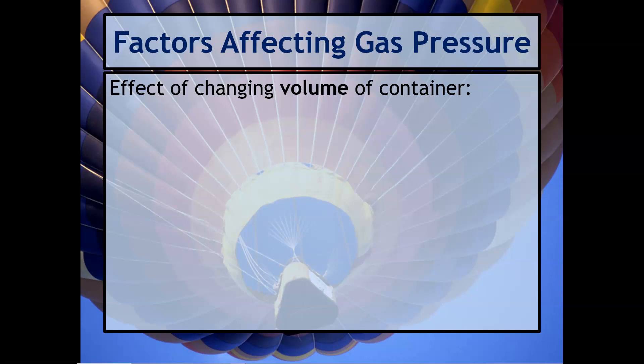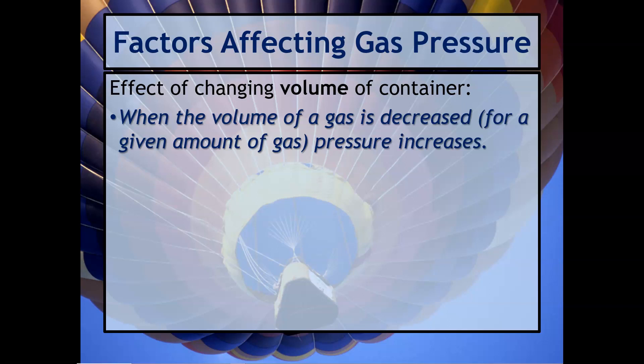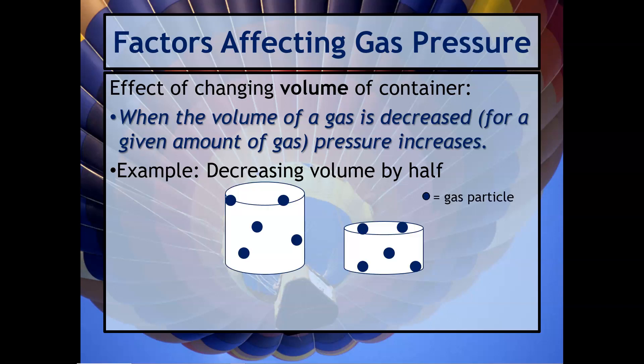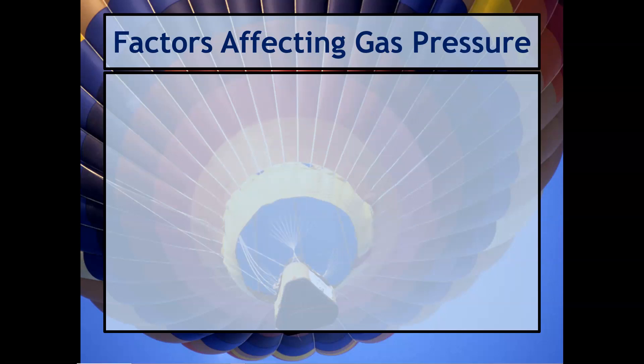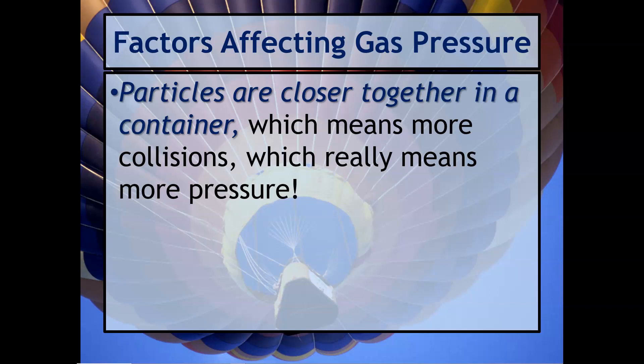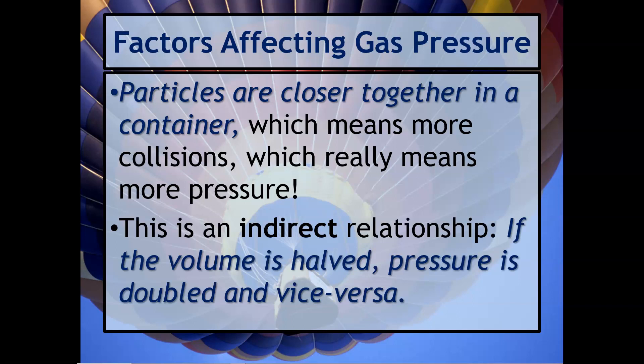Let's now talk about changing volume. If you change the volume of a gas — say you make the container smaller while the amount of gas stays constant — we're going to expect the pressure to increase. For example, if you decrease the volume of a cylinder by half, the particles are going to be colliding more often with the walls. So we would expect if the volume is halved, we're going to get two times the pressure. This is an indirect relationship: the volume decreases but the pressure increases. The volume of the container is halved, but the pressure doubles.